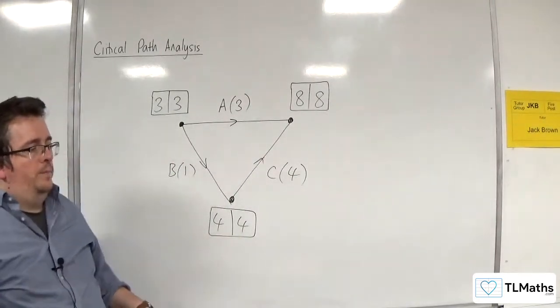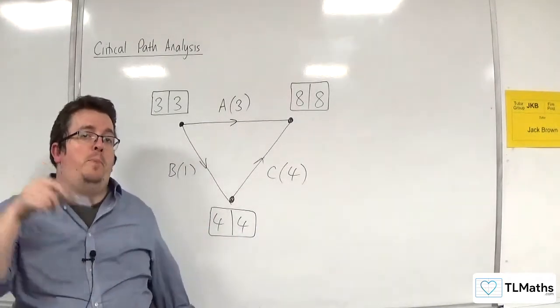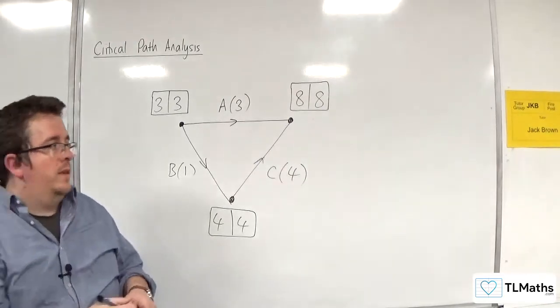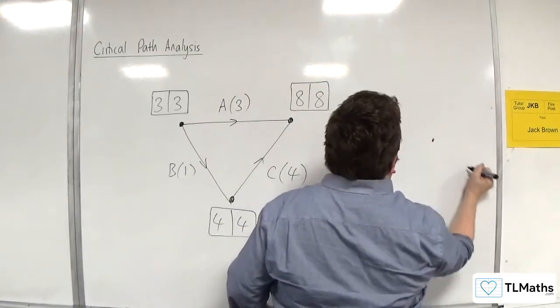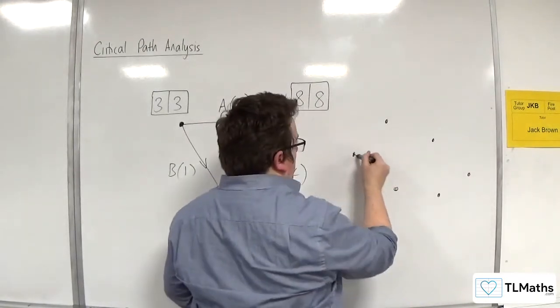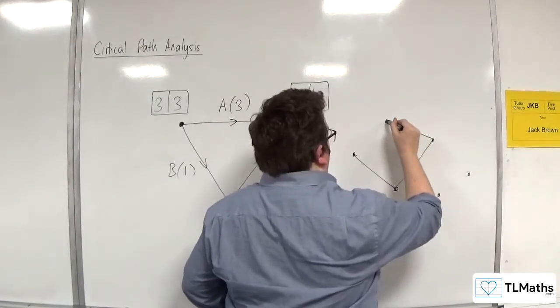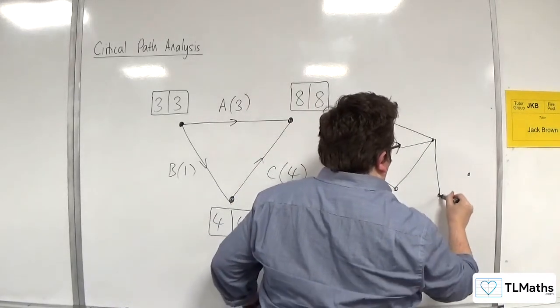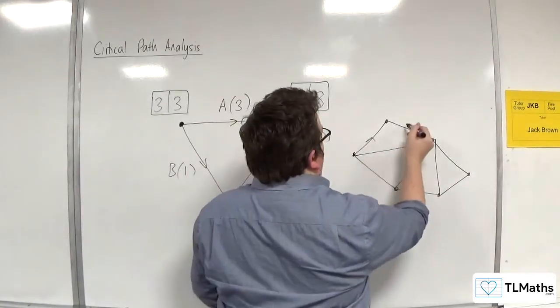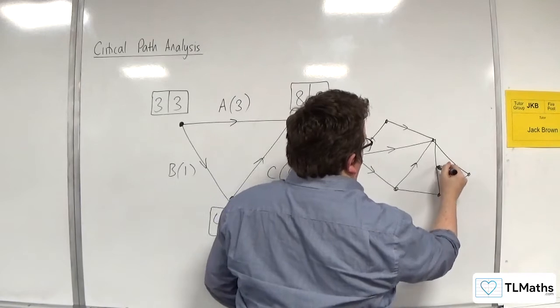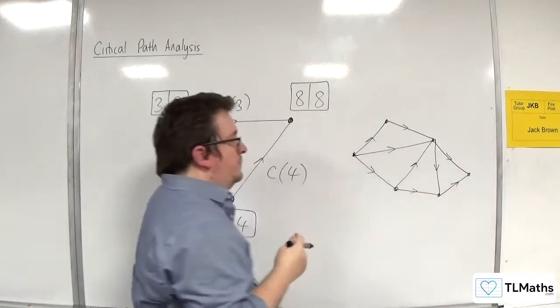Now, what you need to know is that the critical activities form a critical path through the network. So if, for example, let's say we've got something that looks like this. I didn't draw that very well. Let's try that again. So I'm just drawing up a network. Let's say it looks something like this.